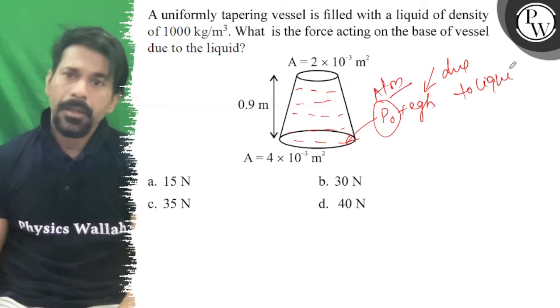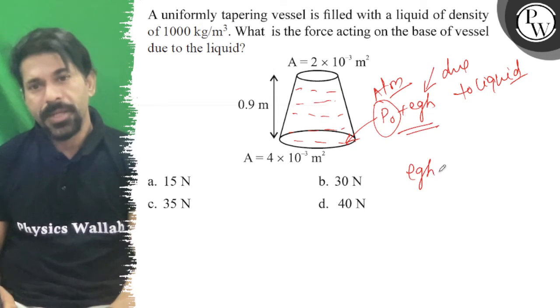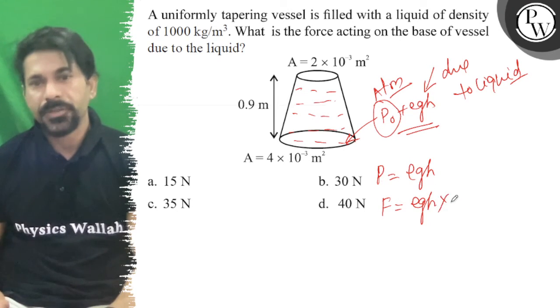So what do we need to do? We need to find the pressure due to liquid, that is ρgh. We will write ρgh as the pressure at the bottom. So force at the bottom will be equal to ρgh into area of cross section, that is 4 × 10⁻³.